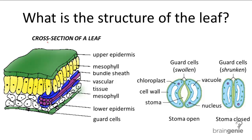The leaf is the primary photosynthetic organ of the plant, and it consists from top to bottom of the upper epidermis, palisade mesophyll, the bundle sheath cells, vascular tissue, the spongy mesophyll, lower epidermis, and the guard cells.